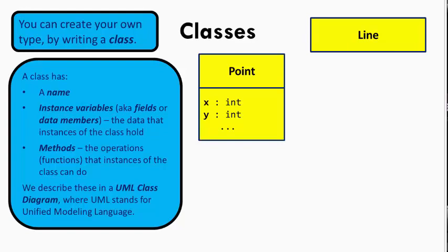Other languages use the words field or data members instead of instance variable. Three ways to say the same thing. A point might have other instance variables. For example, a variable that indicates whether the point should currently be visible or not on the canvases on which it is drawn.